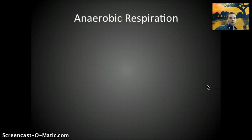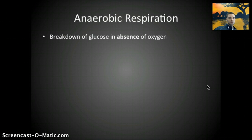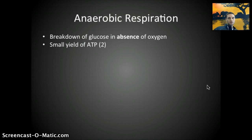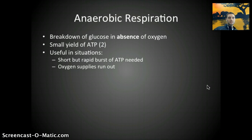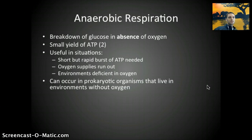There are two different forms of respiration. Anaerobic, meaning without oxygen — the breakdown of glucose in the absence of oxygen — and aerobic respiration. Anaerobic respiration produces a small yield of ATP, about two ATPs. It's useful when there's a short but rapid burst of ATP needed, when oxygen supplies run out, or in an environment deficient in oxygen. This can occur in prokaryotic organisms that live in environments without oxygen, like deep sea vents, where bacteria use sulfur in order to produce their energy.